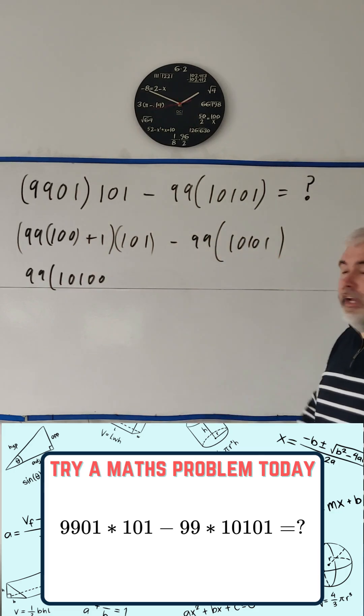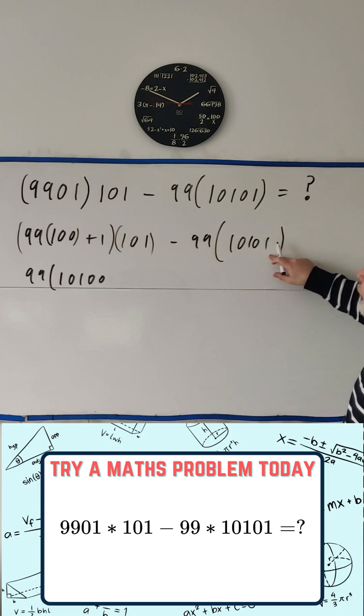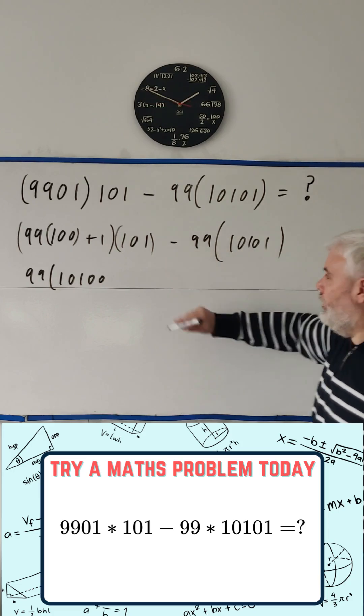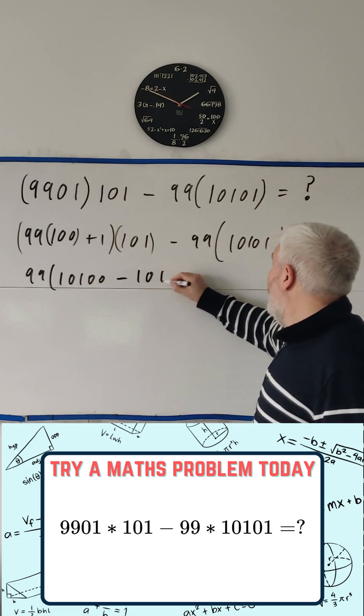What else is multiplying 99? This 10,101 and this minus 1. So that becomes minus 10,101.